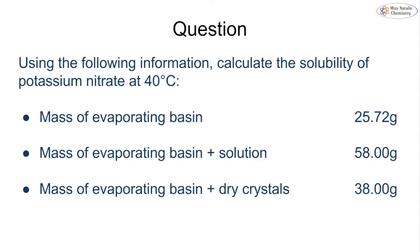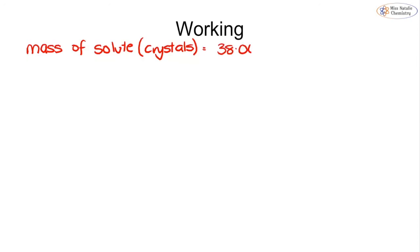To get the solubility, the first thing we need to work out is what is the mass of the solute, or the mass of the crystals. We can do that using the information on the previous slide. We know the mass of the basin and the crystals is 38, but we can take away the mass of the basin. So if we do 38.00 subtract 25.72, we get an answer of 12.28.